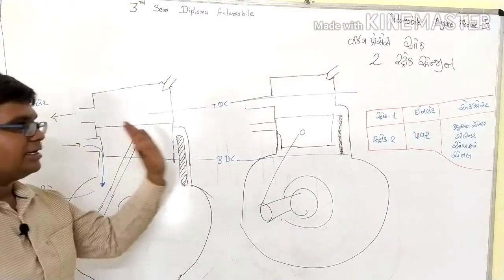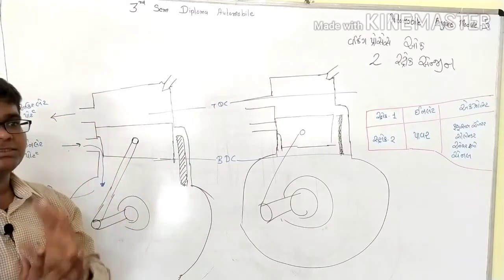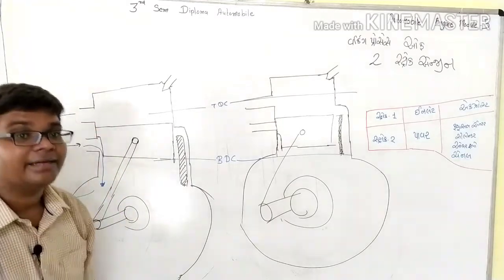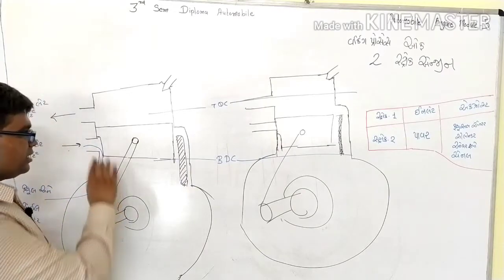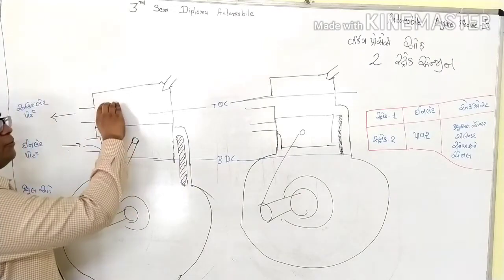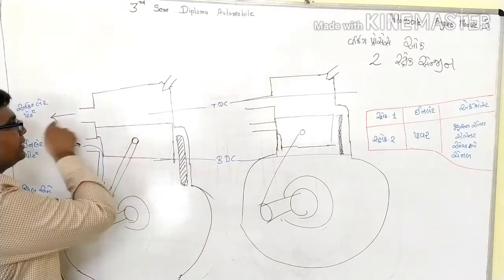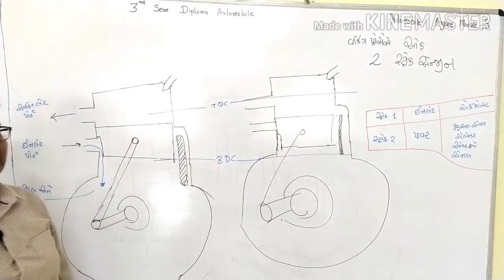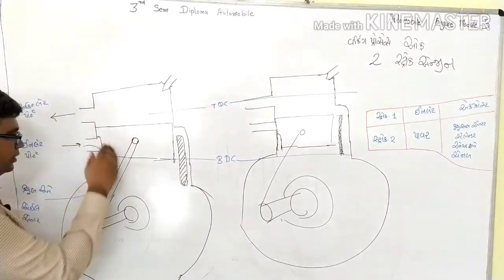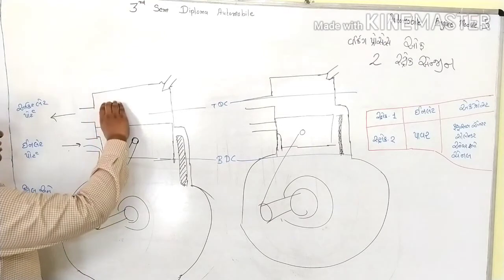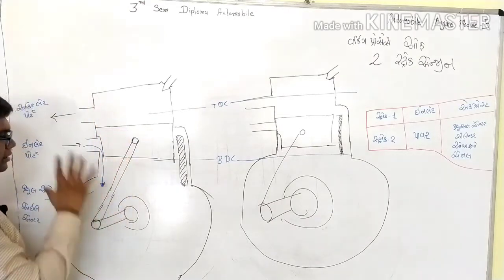In this process, the inlet stroke and the exhaust stroke happen at the same time. The fuel is added as the exhaust gas is being pushed out. The exhaust gas is expelled and fresh fuel mixture enters through the overflow channel simultaneously.